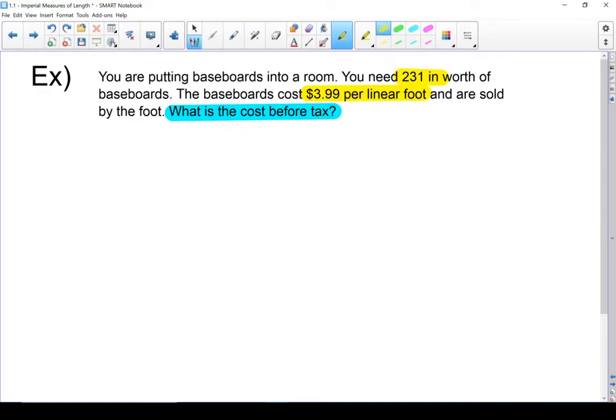So what that's saying is every foot of baseboards costs $3.99. Another piece of information you have to notice here is that baseboards are sold by the foot. You can't buy part of a foot. So in this question, you're going to have to round up to the nearest foot.